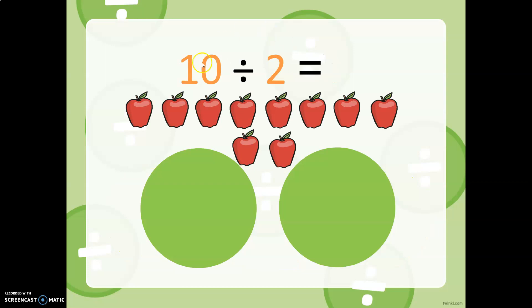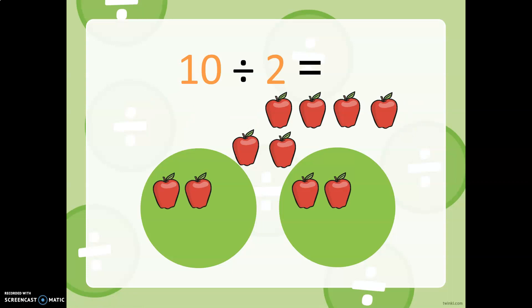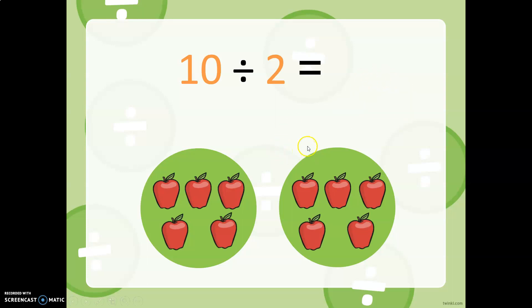Here we have ten apples and two tables. So we want to divide and share all ten apples between these two tables. So one, we give each table one, two, three, four, five. So we have ten apples divided into two tables. How many apples does each table have? Five.